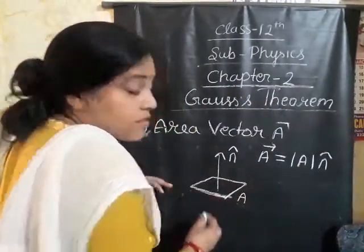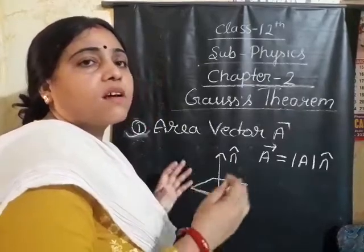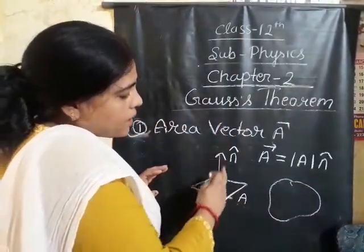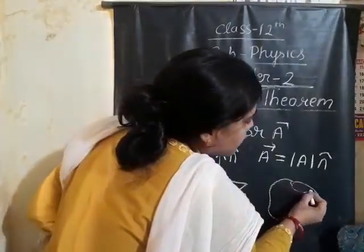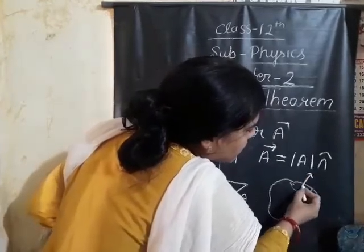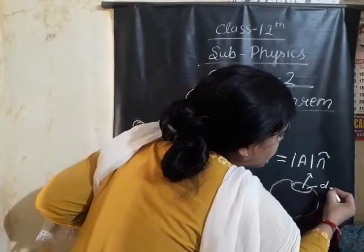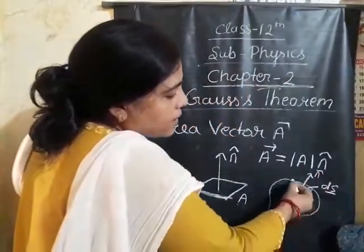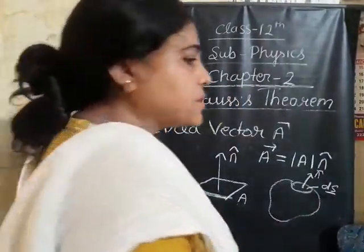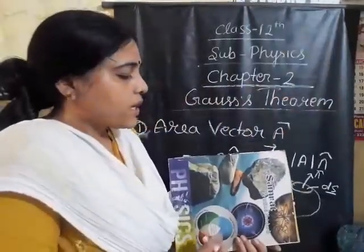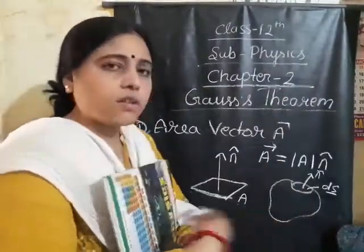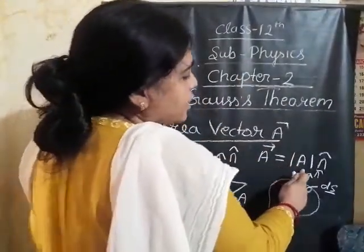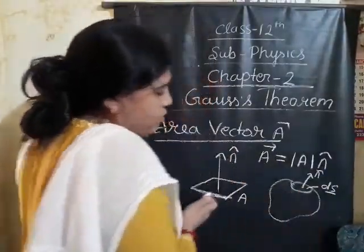Surfaces are of two types: open surface and closed surface. For a 3D closed surface, there is an area vector for each area element. We take a small part called the area element, and the direction of its perpendicular is outward. Mathematically, the area vector is defined as having magnitude equal to the area of the surface and direction perpendicular to the surface.